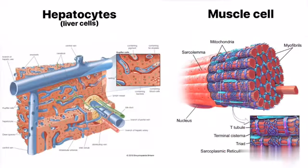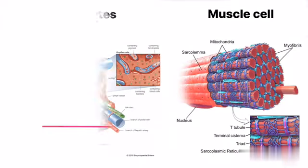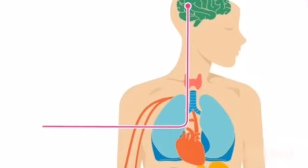Glycogen synthase is expressed in muscle cells and also in hepatocytes, which are liver cells. The body's cells need a steady supply of fuel in order to function the right way. This fuel is glucose, a simple sugar.